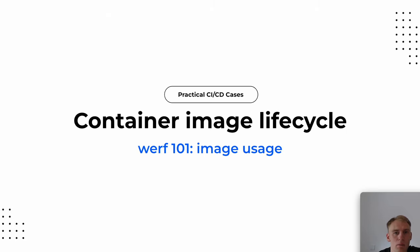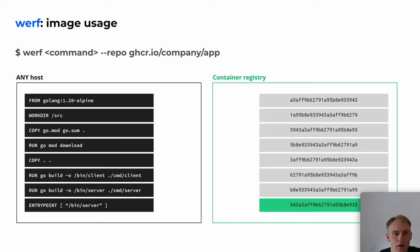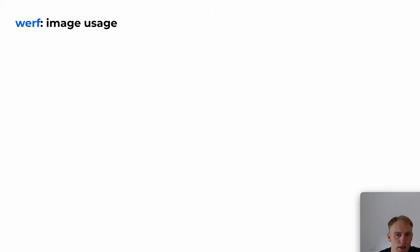Let's talk about image usage — what the synchronization process is and how we can use images with Werf. The synchronization is performed within all Werf commands that require images during operation. After the synchronization, the command continues with the final image, which matches the content-based tag for the last layer. Let's look at some Werf commands in action. Suppose we want to run some source code tests — for example, a unit test. We add a Dockerfile for our image.